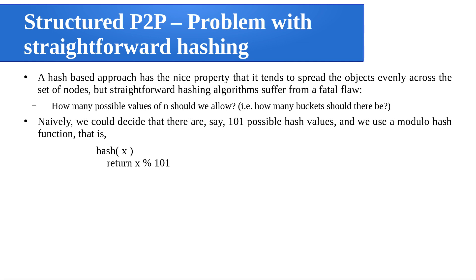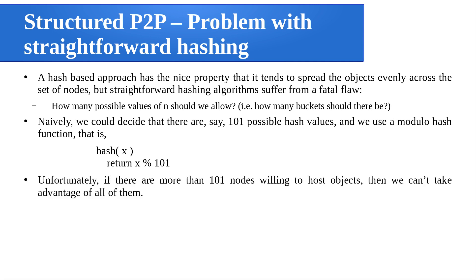Take an example: we decide there are 101 possible hash values, assuming 101 machines. We use a modulo function — hash(x) = x mod 101, giving values from 0 to 100, which means 101 different values and you can distribute objects into 101 machines. Unfortunately, if more than 101 nodes are willing to host objects — say 150 or 200 nodes join later — you can't consider them. That is a problem; you can't take advantage of all of them, so you are not getting a truly even distribution.